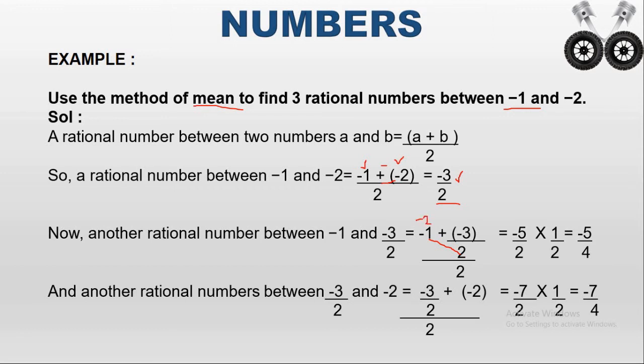Again two operators are near together, so you change the sign — plus into minus is minus. So minus two minus three gives minus five. So minus five by two. Here in the denominator you have two; when it comes to the numerator it becomes one by two. So minus five into one is minus five, and two into two is four.